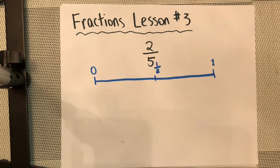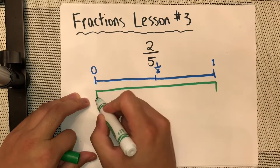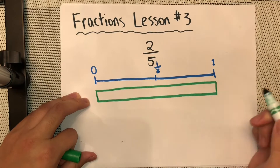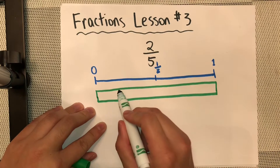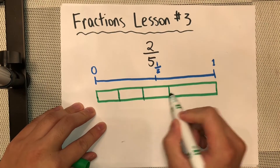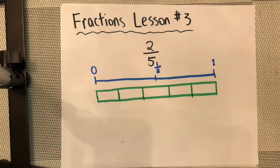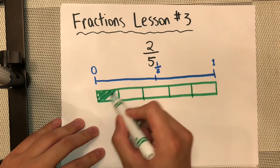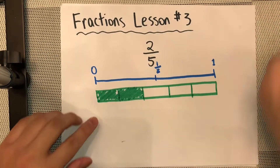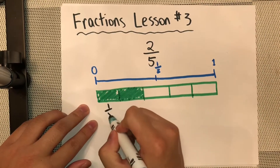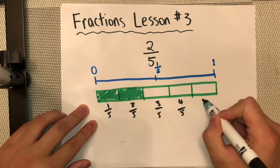What I can do is use this number line almost like a strip of paper — one big long rectangle — and split it into five equal sections. So I have five equal parts, and I'm going to count two of them. That gives me: one fifth, two fifths, three fifths, four fifths, five fifths.